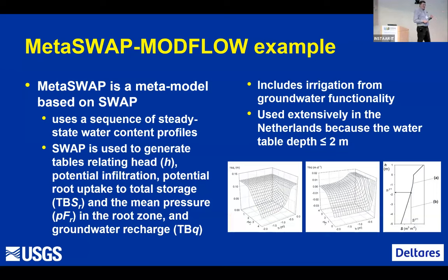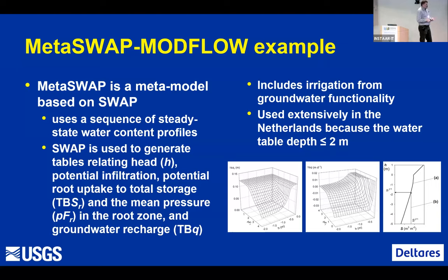What's Metaswap? Metaswap is a model developed in the Netherlands — it's a meta-model of SWAP. Basically, it's an emulator of Richards' equation. It uses a sequence of steady-state water content profiles and uses the SWAP code to build a series of tables that relate groundwater head, infiltration, and root uptake to the mean pressure in the root zone and groundwater recharge. It's very fast and can represent Richards' equation. Our Deltares colleagues use this — the coupled Metaswap and ModFlow are used in the Dutch national hydrologic instrument. It's used extensively in the Netherlands, where in most areas the depth to water table is less than two meters, making a real Richards' emulator important.